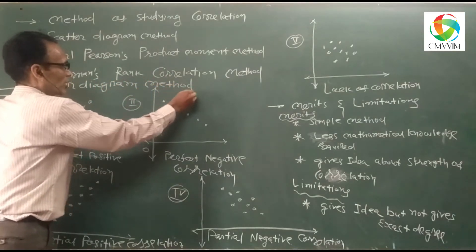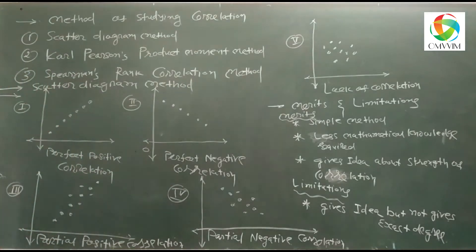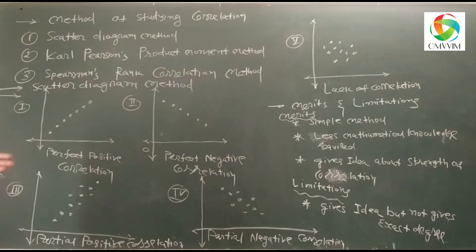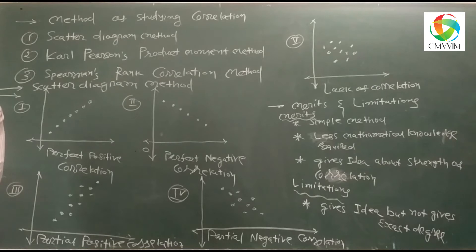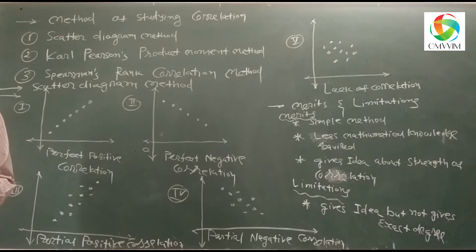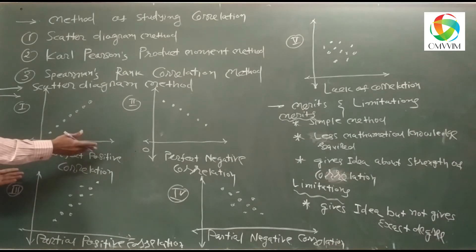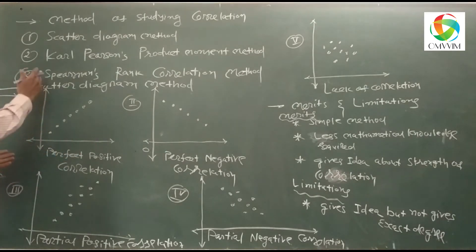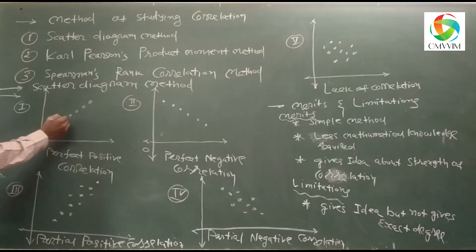In the scatter diagram method, when two variables are given — one variable x and second variable y — one variable is plotted on the x-axis, the second variable is plotted on the y-axis, and the points are plotted on graph paper.